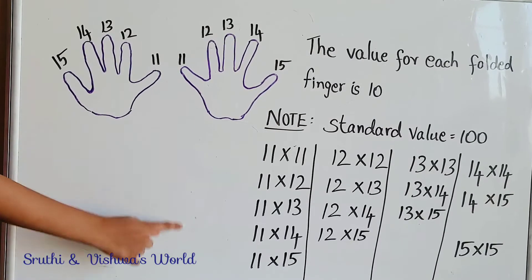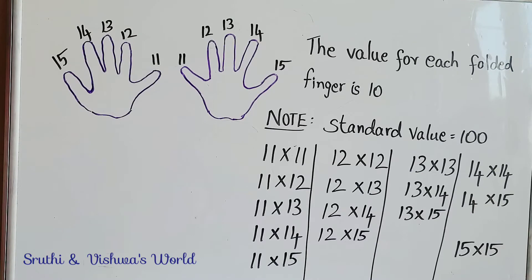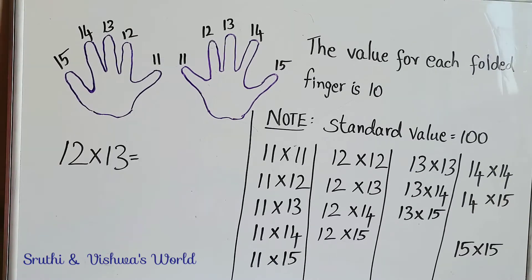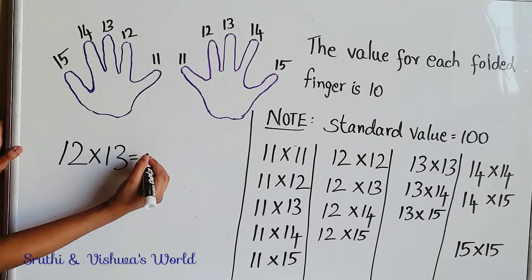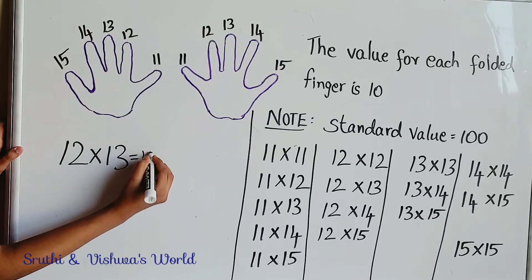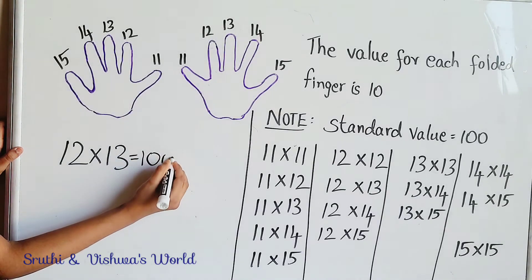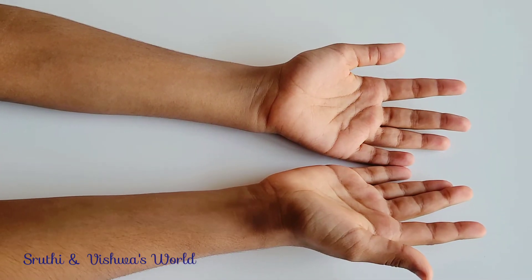Here I have listed the numbers that you can multiply by using this trick. So let's try 12 times 13. Remember that the standard value is 100, so let's write 100.